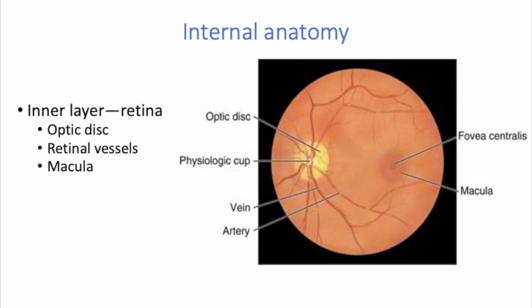The retinal vessels normally should include paired arteries and veins that extend to each quadrant. The macula is located on the temporal side of the fundus of the eye — a slightly darker pigmented region surrounding the fovea centralis, which is the sharpest and keenest vision center. It receives and transduces light from the center of the visual field.